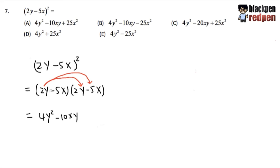We've paired up 2y with both things in the second parentheses, so we are done with 2y. Now we move to negative 5x. We take negative 5x and multiply with 2y: negative 5 times 2 is negative 10, and x times y is just xy.